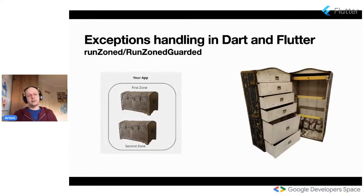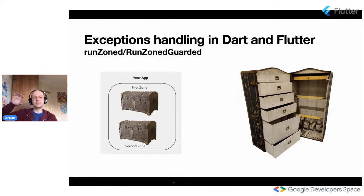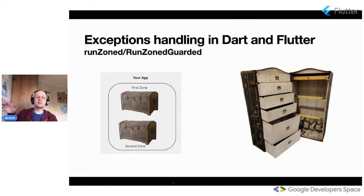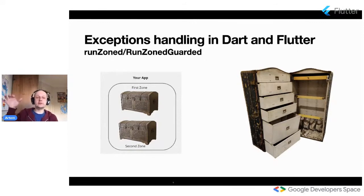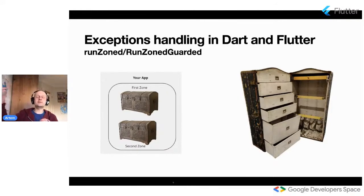Zones can help you isolate some code — make it error-independent from other blocks of your code. One example where you can use it: on the backend, if you have HTTP servers that serve each client with some functionality, you can wrap each client instance into its own zone so that errors from one instance don't leak to another. Zones can help you with this.